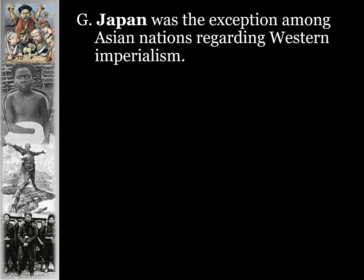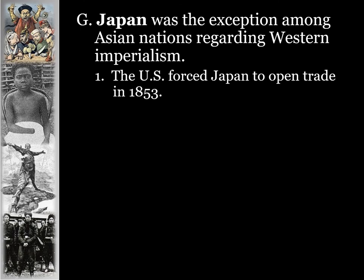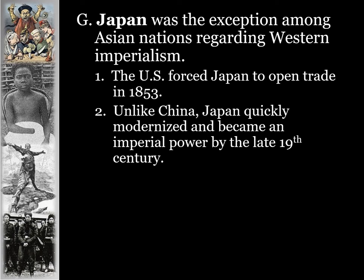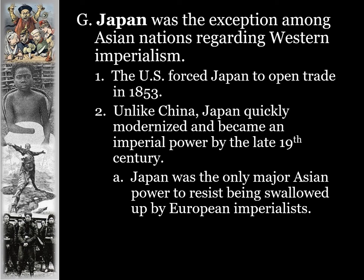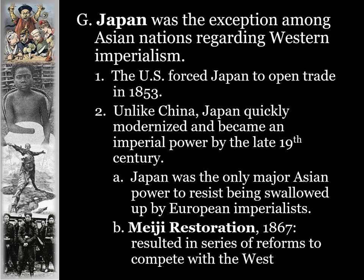Japan was the exception among Asian nations regarding Western imperialism. The U.S. had forced Japan to open trade in 1853. Unlike China, Japan quickly modernized. Rather than fighting against Westernization, they decided to adopt Western ways and become an imperial power themselves by the late 19th century. Japan was the only major Asian power to resist being swallowed up by European imperialists by basically becoming more like them. The Meiji Restoration in 1867 was one of the key reasons — it ended the shogunate period, putting control back in the hands of the Meiji Emperor, who fostered Westernization, recognizing Japan would have to modernize, Westernize, and industrialize to compete.